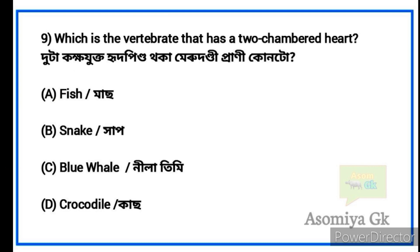Next question: Which vertebrate has a two-chambered heart? Option 1: Fish. Fish has a two-chambered heart. A snake has three chambers, a blue whale has four chambers, and a gorilla and crocodile also have four-chambered hearts.